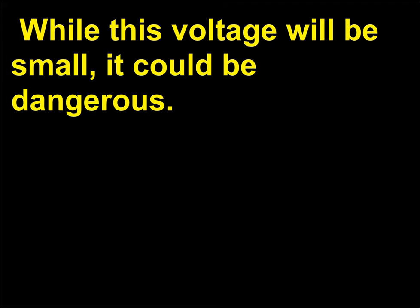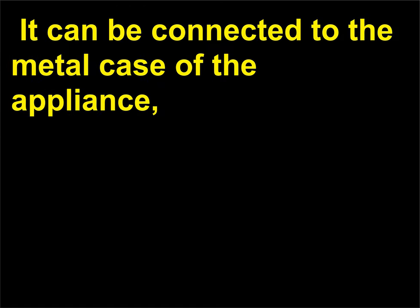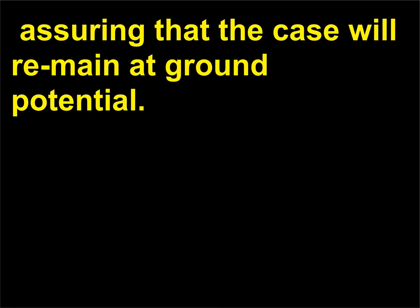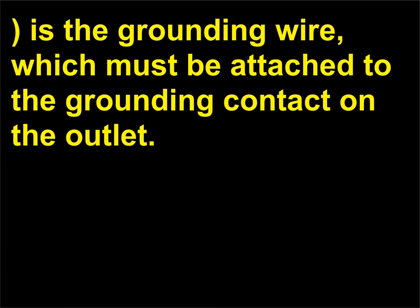The green wire, which carries no current, will remain at ground. It can be connected to the metal case of the appliance, assuring that the case will remain at ground potential. When installing an electrical outlet, the green wire — which is the grounding wire — must be attached to the grounding contact on the outlet.